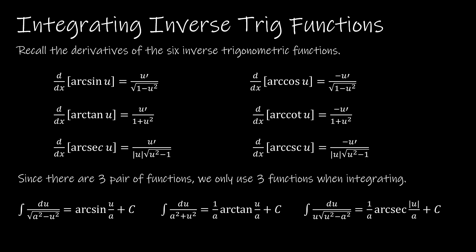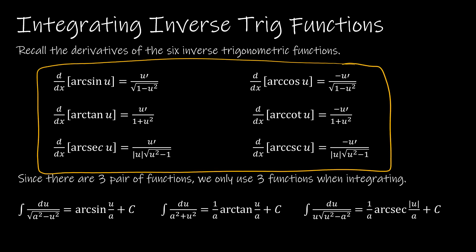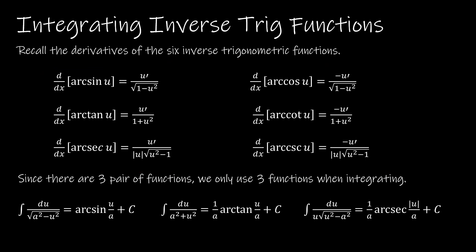We just finished reviewing how to find the derivative of inverse trig functions — the same six functions from the last video. We pointed out that if you knew the derivative of arc sine, all you had to do was find the negative value for arc cosine, and similarly for tangent and cotangent, arc secant, and arc cosecant. So for that reason, when we are integrating, we're only going to worry about three: arc sine, arc tangent, and arc secant.